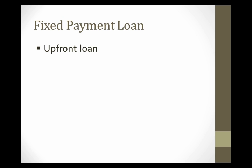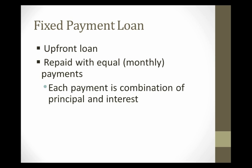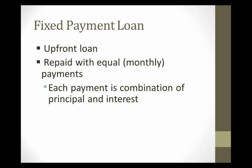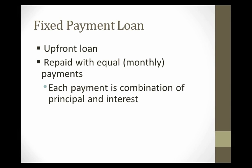A fixed payment loan starts with an upfront loan, and then it's usually repaid in equal payments. Most commonly in credit markets, we're looking at monthly payments. Each payment is a combination of principal and interest. Because the payments are equal, earlier payments are going to be mostly interest and a little bit of principal. As the principal is paid down, later payments are mostly principal and a little bit of interest.